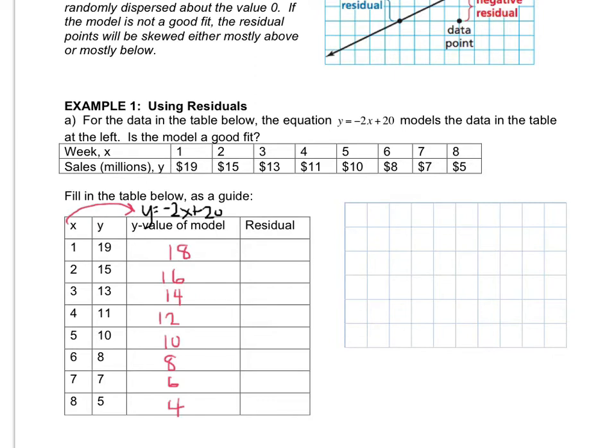Now the residual is the difference between the actual y-value and what it is on the line. So this y-value would be 1 because it's 1 higher. This residual is going to be -1 because this point is actually 1 lower than where it would be. It should be at 16, but it's actually at 15, which is not necessarily a bad thing. This next residual is going to be -1 because it's at 13 and the line puts it at 14. This residual is also -1. Then I've got a 0 and a 0 and a 1 and a 1.